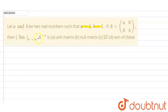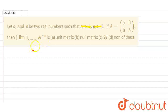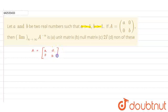First of all, we need to find the value for A raised to power minus n. We will first find the value for A squared, then A cubed, and by using the general formula we will get the value for A raised to power minus n. So what is the matrix A? It is [[a, 0], [0, b]]. Let us calculate A squared: A squared equals [[a, 0], [0, b]] multiplied by [[a, 0], [0, b]], giving us [[a², 0], [0, b²]].